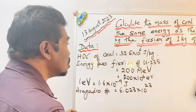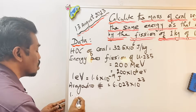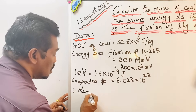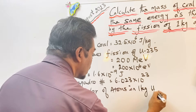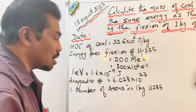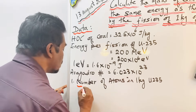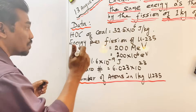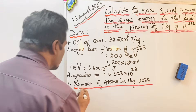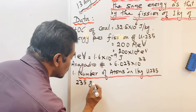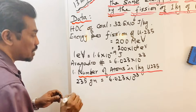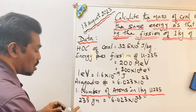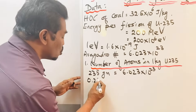Now let us begin the calculation. This question consists of 3 parts. The first part is to calculate the number of atoms in 1 kilogram of uranium-235 using Avogadro's number. The molar mass of uranium-235 is 235 grams, which consists of 6.023 × 10²³ atoms. Converting to kilograms, 0.235 kilograms consists of 6.023 × 10²³ atoms.